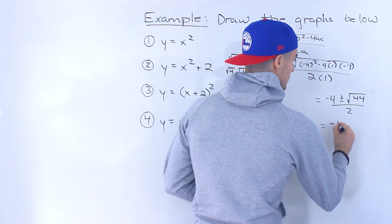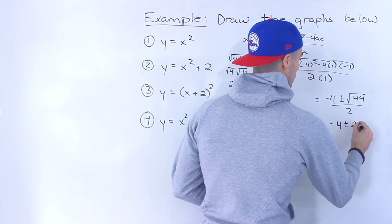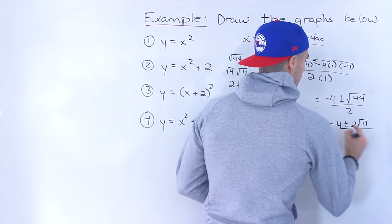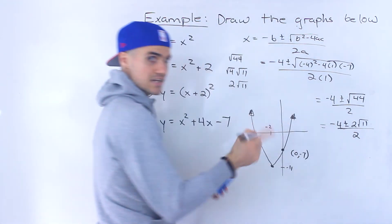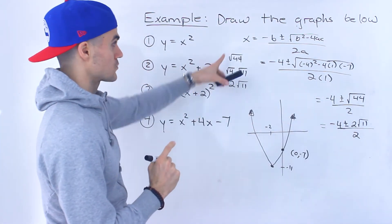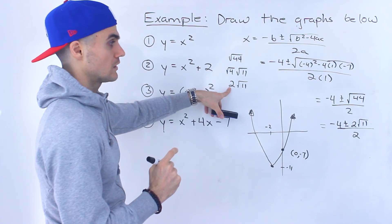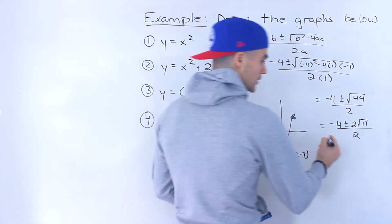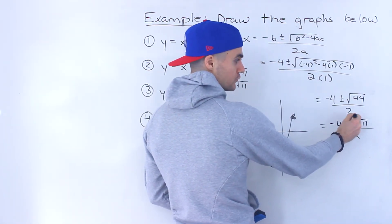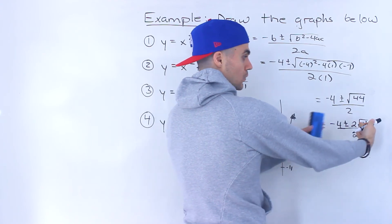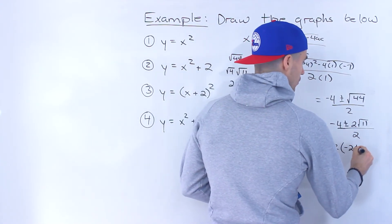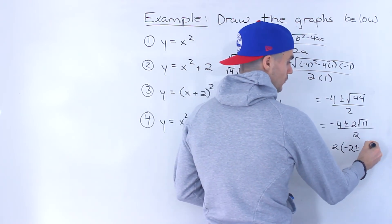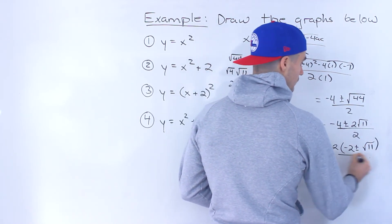So this over here simplifies to, the root 44 simplifies to 2 root 11. They're the exact same thing if you plug them into your calculator, square root of 44, 2 root 11. And then from here what you could do, now that we have a coefficient in front of the root, we can factor out a 2. And there would be like a 1 left here, so we don't even have to write that, and then we'd still have that root 11.